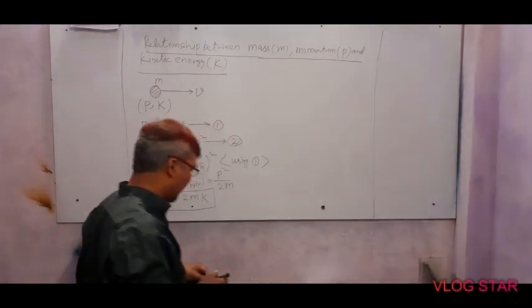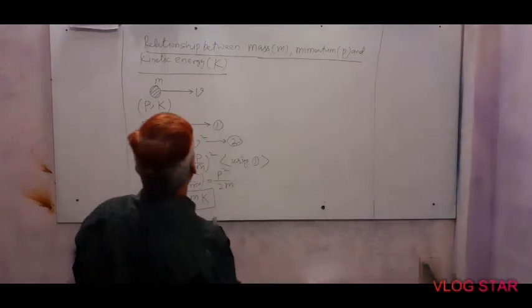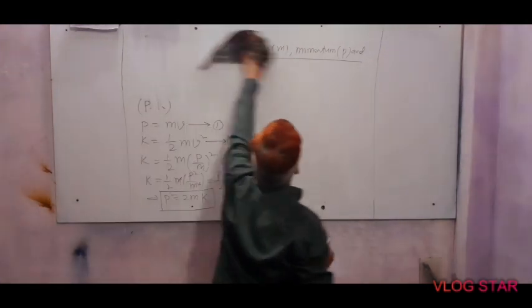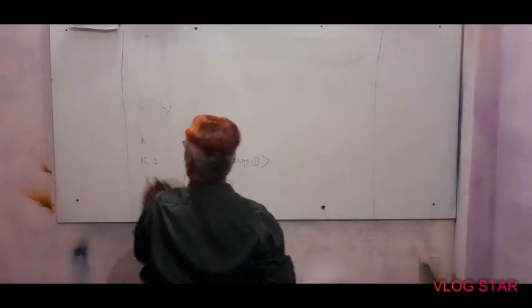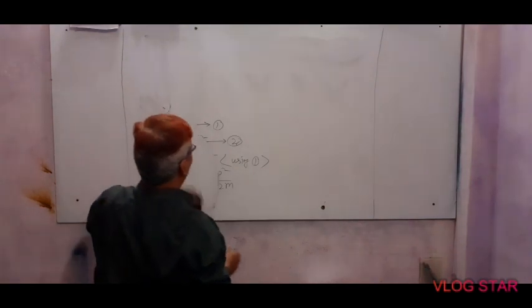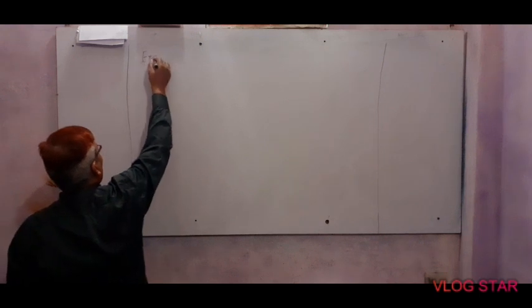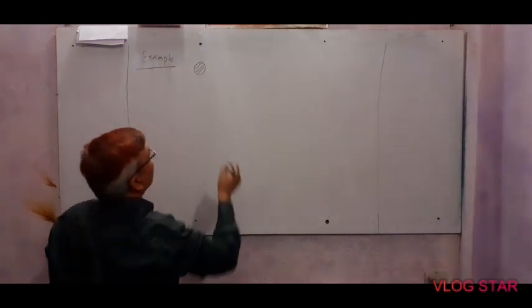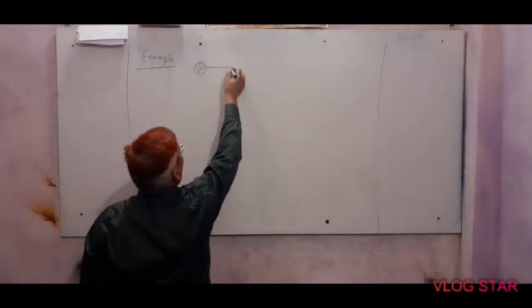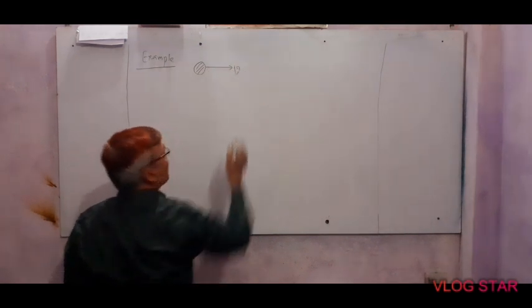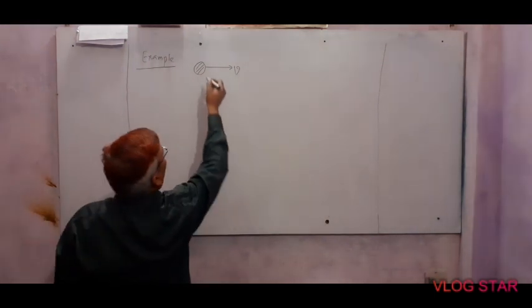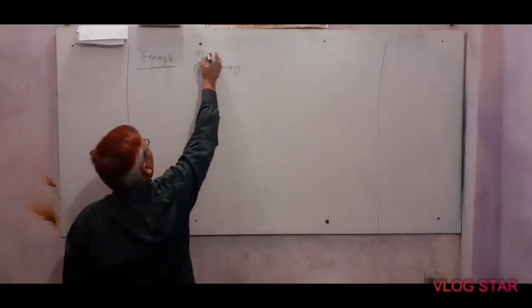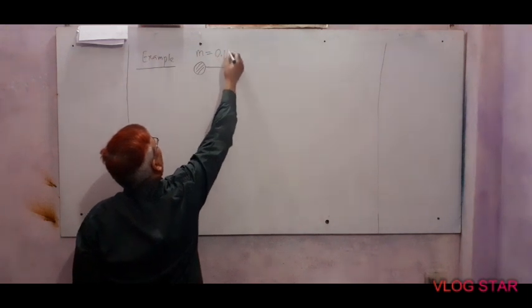Now we will discuss an example. Suppose there is an object which is moving with velocity v, and for this object mass has been given as 0.1 kg.